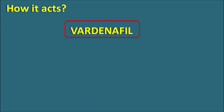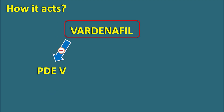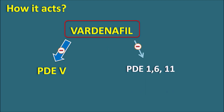How does Vardenafil act? Vardenafil is a drug that inhibits the phosphodiesterase enzyme. There are many types of phosphodiesterase enzymes in our physiological system, but Vardenafil is highly selective for the inhibition of phosphodiesterase type 5. Apart from this, it can also inhibit phosphodiesterase type 1, 6, and 11.